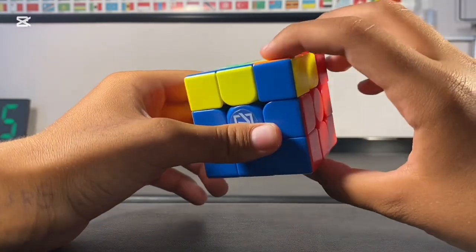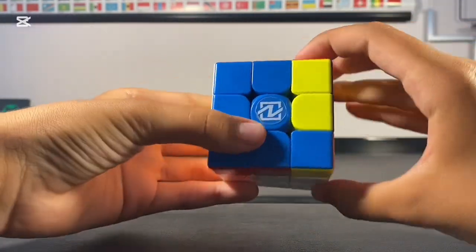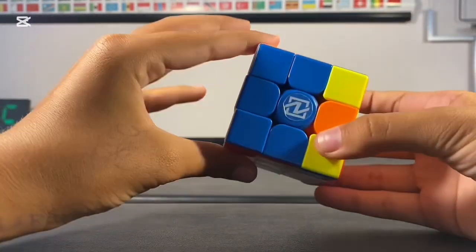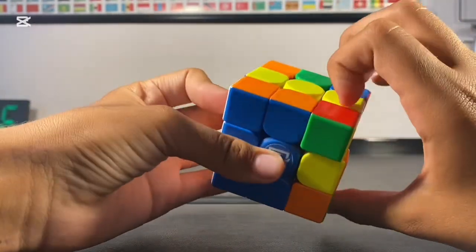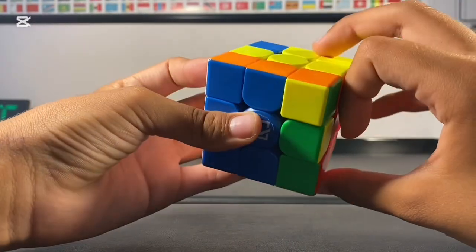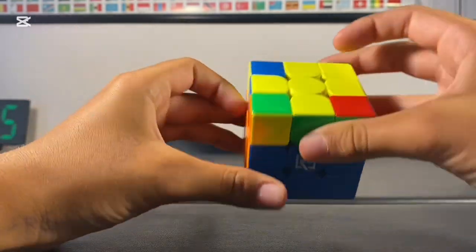Number one, the dot. F-R-U-R prime U-prime F prime. Then you end up with case number two. Place the cube like this and do the algorithm. This time, you'll end up with case number three, and you have to do the algorithm once again.